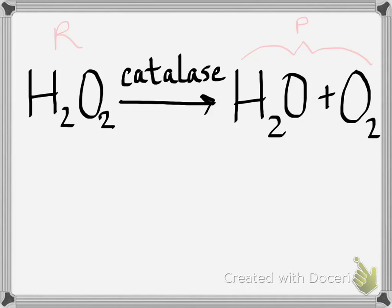What role does catalase play? It's not a reactant and it's not a product. It's an enzyme — good, Patricia. How did Patricia know it was an enzyme? It ends with -ase. It's also written above the arrow, indicating it's not a reactant or product, but it definitely speeds the reaction. That's what enzymes do — they speed up reactions.